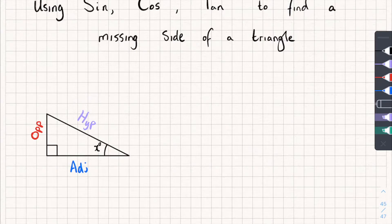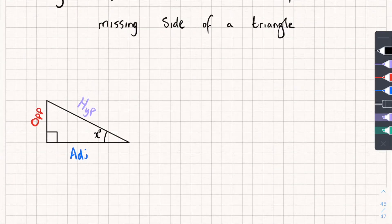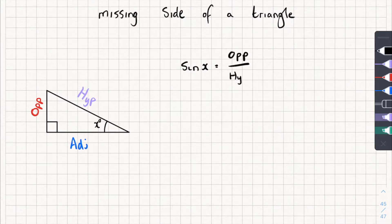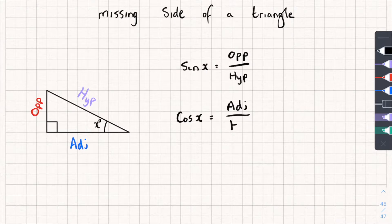Now let's have a look at these rules. The first one is sine — sine is just a button on your calculator that gives you a number. Sine of the given angle is equal to the opposite side divided by the hypotenuse. The other one is cos of the given angle, which is equal to the adjacent side divided by the hypotenuse.